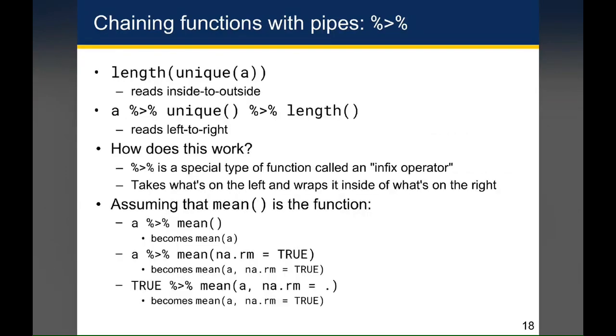The reason the pipe version is a little bit more clear in what you want to do is that it actually reads in the correct order. When you're trying to say start with A, then get the unique values, and then get the length in that first line of code, you're actually reading from the inside and working your way out, because you're starting with the A and then working your way back out to length. However, when you use the pipes to write the same exact line of code, you're actually reading from left to right because you're saying start with A, get the unique values, and then calculate the length.